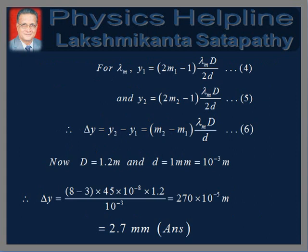The two positions y1 and y2 for wavelength lambda_m are given in equations 4 and 5. Therefore, the distance between y1 and y2 is given in equation 6. Putting in the values and simplifying, we get delta y = 2.7 mm, which is the answer to the question.